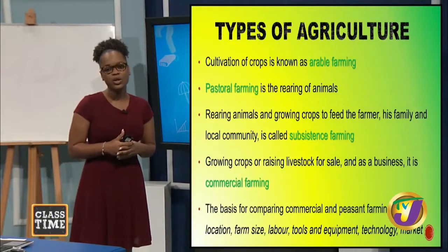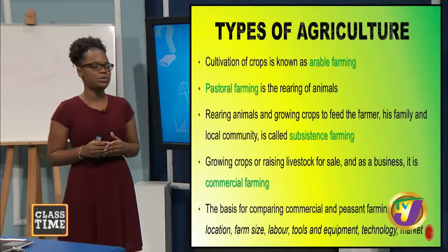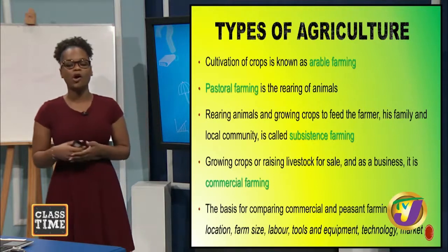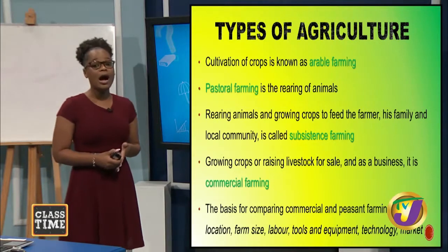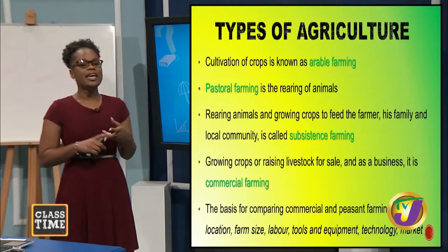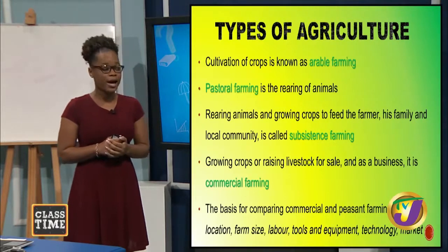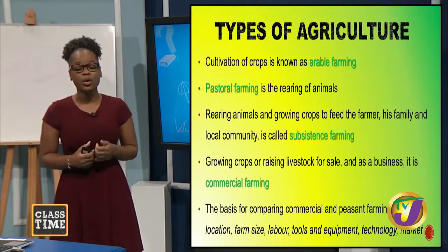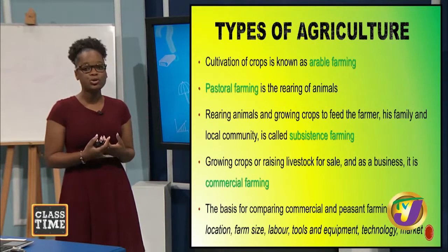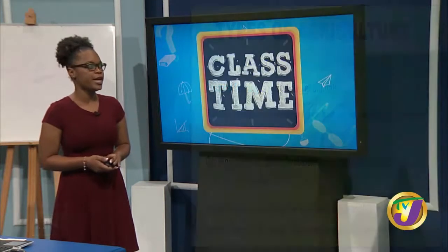Agriculture is measured using different dimensions, and these are also used as characteristics to distinguish between subsistence farming and commercial farming. These characteristics include the location, the farm size, the labor involved in production, the tools and equipment used on the farm, the technology used, as well as the market or purpose for engagement.